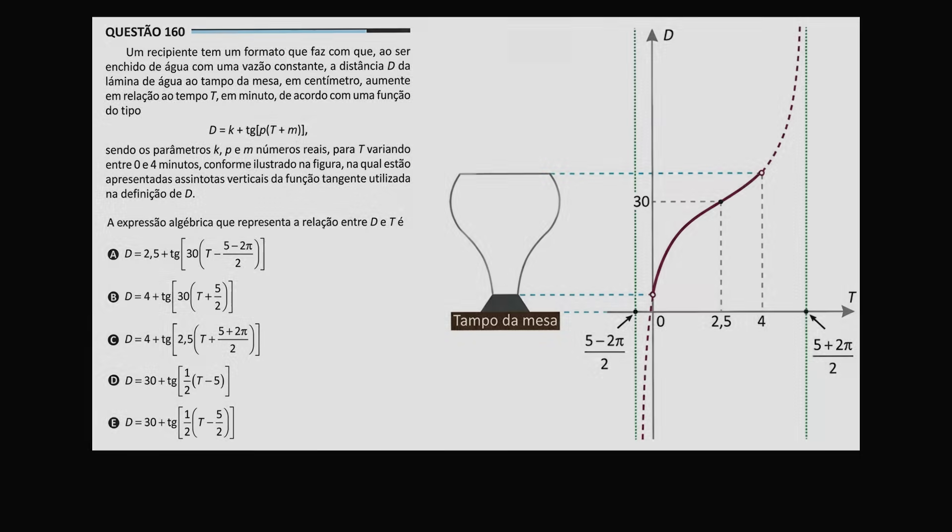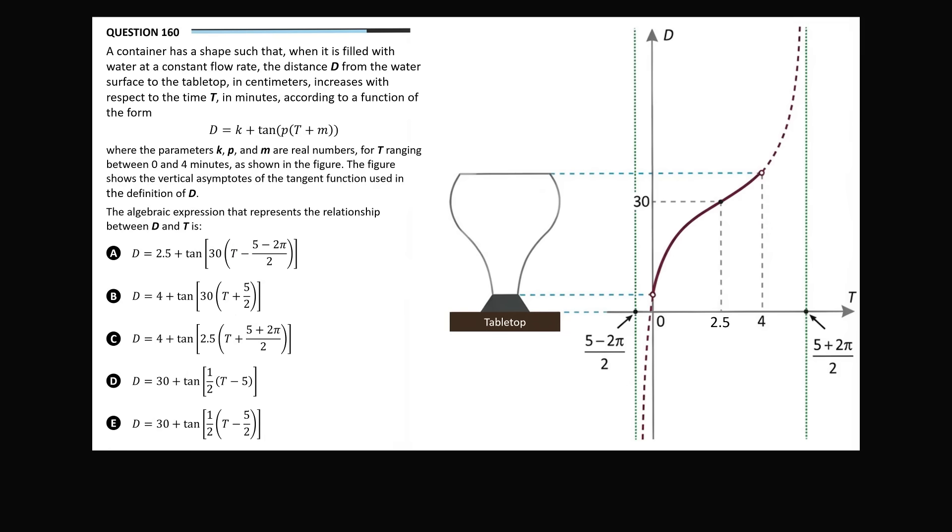So here is the question in its original language. And now let's just translate it into English. A container has a shape such that when it is filled with water at a constant flow rate, the distance D from the water surface to the tabletop in centimeters increases with respect to the time T in minutes according to a function of the form D is equal to k plus tangent of the quantity p times the quantity t plus m, where the parameters k, p, and m are real numbers for T ranging between 0 and 4 minutes as shown in the figure. The figure shows the vertical asymptotes of the tangent function used in the definition of D. The algebraic expression that represents the relationship between D and T is—then there are five answer choices and you have to select the correct option.